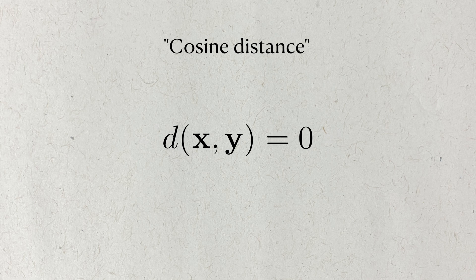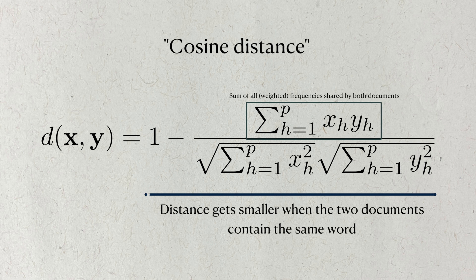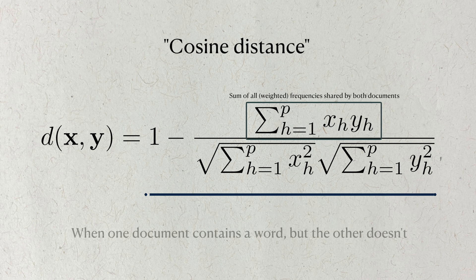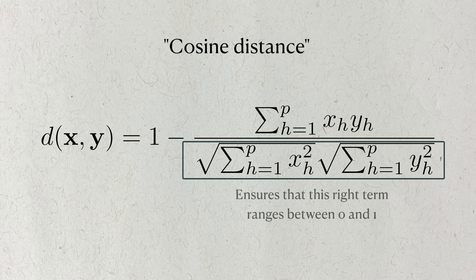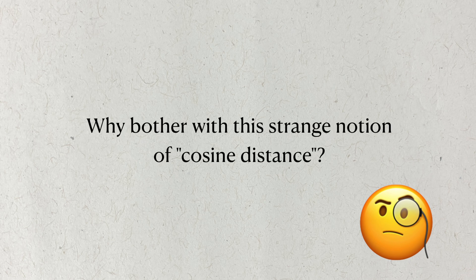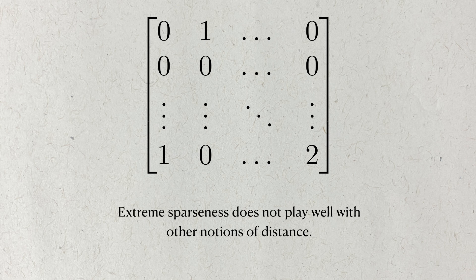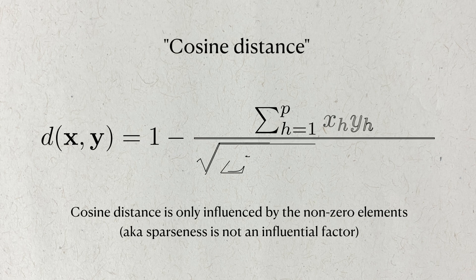Distance in this sense refers to a single number that describes how different two things are. When the distance is zero between two things, we interpret these two items as being the same thing. As you can see in the numerator, this distance gets smaller when both documents have a frequency in the same column. If one document contains a term but the other doesn't, this mismatch doesn't contribute to reducing the distance between the documents. The denominator makes sure that this entire term only ranges between zero and one, and finally we subtract this term from one to make sure that zero indicates sameness. The reason we use cosine distance as opposed to other definitions is sparseness — the sparseness can distort how different two documents are if we use other notions of distance, but cosine distance is resistant to this.